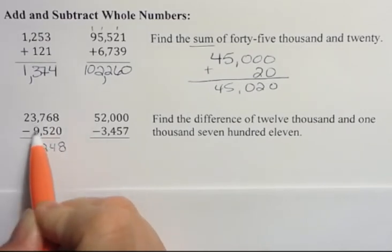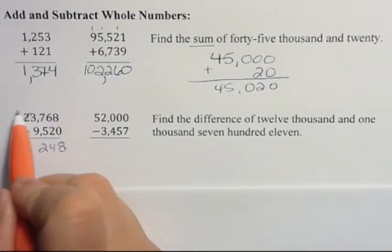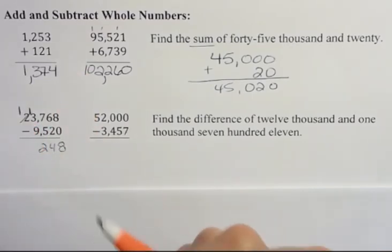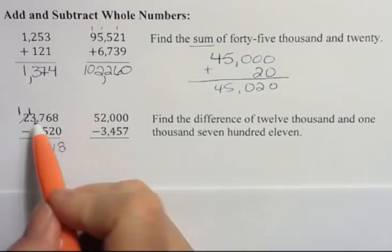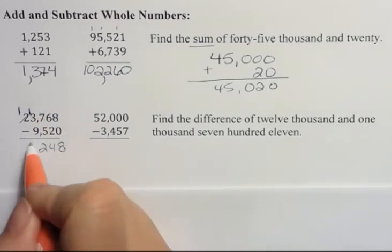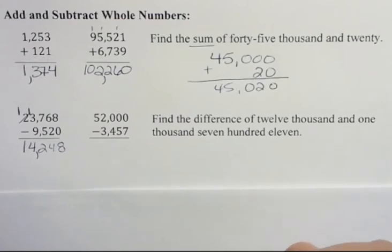Now I have three minus nine. I can't do that. So we borrow. Borrow from the number to the left. I'm going to borrow and leave one behind. And I'm going to bring one here. So now I can say 13 minus nine, which is four. And then I'm going to bring that value down. And then I put the comma between the periods, 14,248.